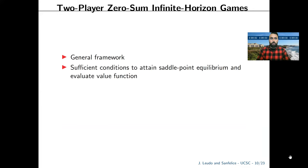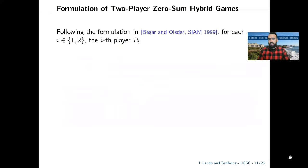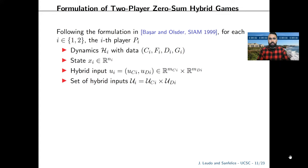In general, we present a framework to model hybrid games, a result with sufficient conditions to obtain saddle point equilibrium and evaluate the value function, and connections between optimality and asymptotic stability with applications in robust and security scenarios. Following the work by Bashar, we present a formulation in which each player has its own dynamics, its own state, its own hybrid input, and its own set of hybrid inputs denoted by the corresponding subindex.